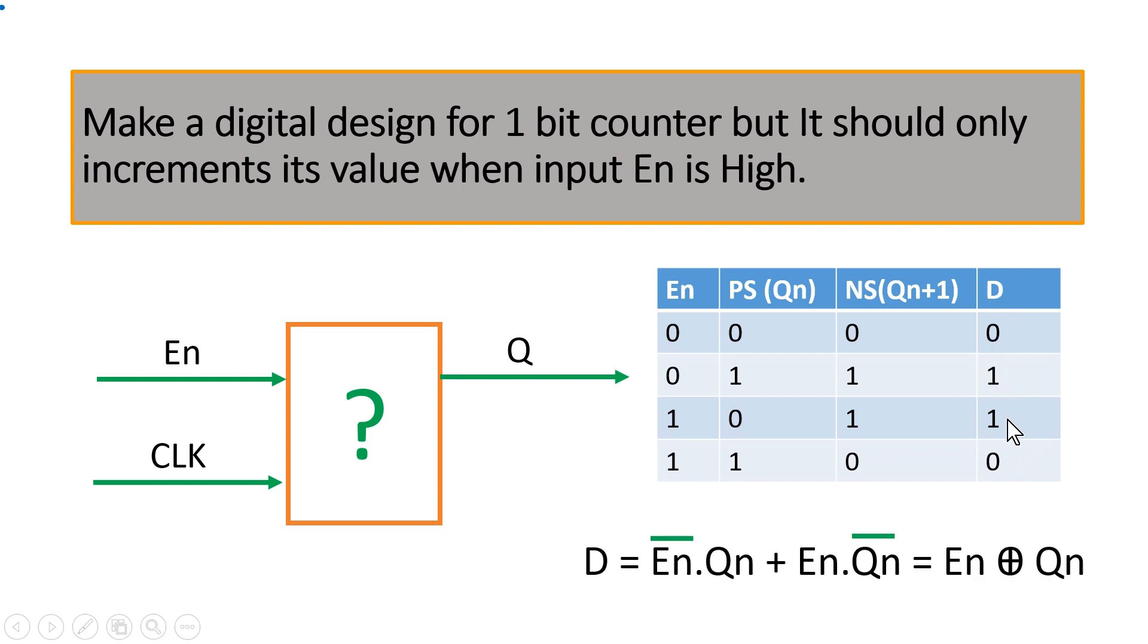Now from here you can easily derive the equation for this D. So you have to take these two points where D is 1. Now let us see at this where the D is 1. It is enable is 0 so enable bar into here Qn is high so into Qn plus now let us take a look at this point. Here enable is high so enable into Qn is 0 here so Qn bar. So if you see this is an expression of an XOR gate so enable XOR Qn.